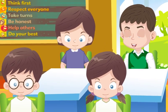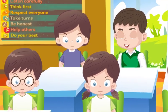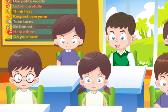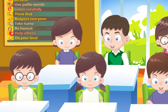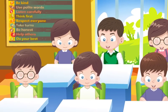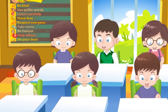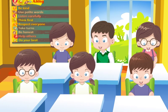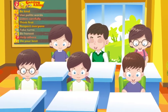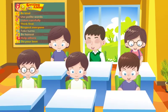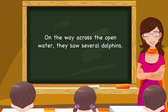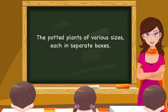'Various' and 'several' are both used before plural countable nouns. 'Various' is used for many things or persons of different types. 'Several' is used for many things or persons of some category. Examples: 'On the way across the open water, they saw several dolphins.' 'The potted plants of various sizes, each in separate boxes.'